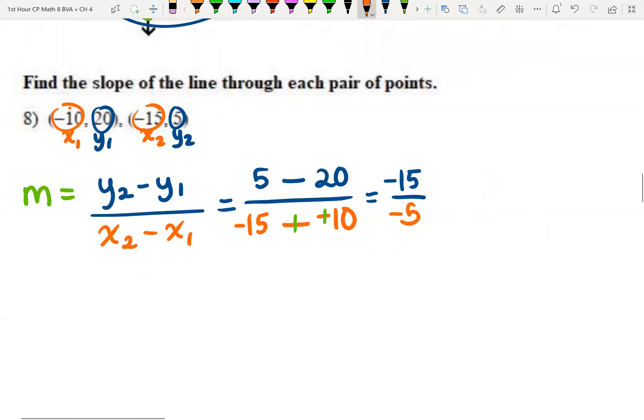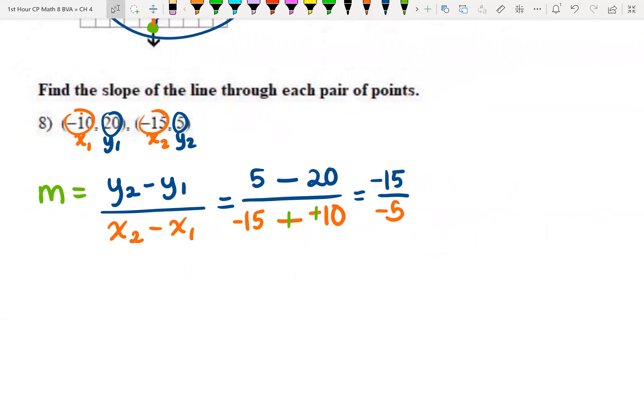Time to reduce that down. 15 and 5 both can be divided by 5. So 5 fits into 15 three times and into 5 one time. And a negative divided by a negative is a positive. So our final answer is positive 3 over 1. Stay tuned for the next part in our series on this review.